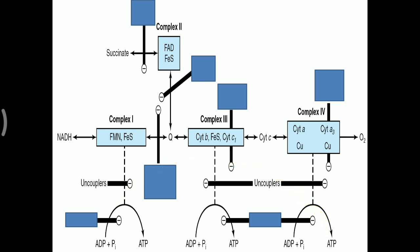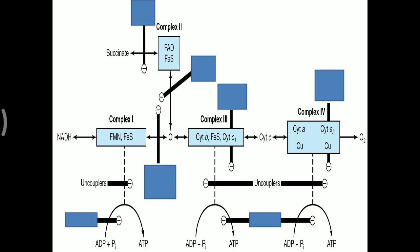In the electron transport chain, complex 1 transfers electrons from NADH to coenzyme Q, complex 2 transfers from succinate via FADH2 to coenzyme Q, complex 3 transfers from coenzyme Q to cytochrome C, and complex 4 transfers from cytochrome C to oxygen. All this electron transport is coupled with phosphorylation, which occurs with the help of complex 5, or ATP synthase.